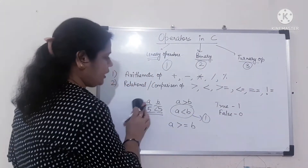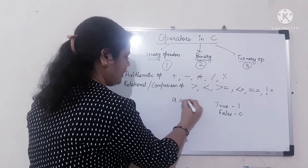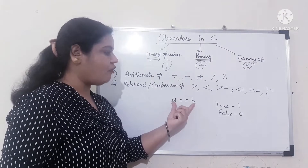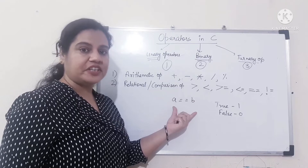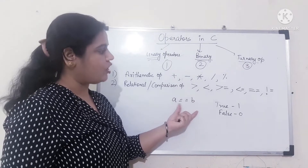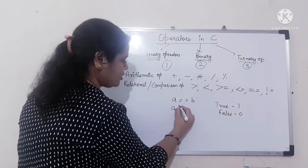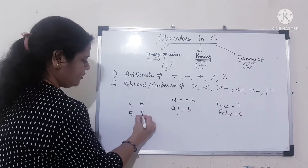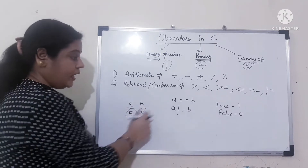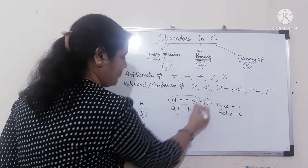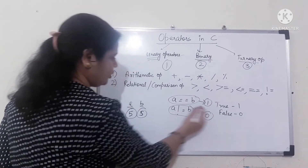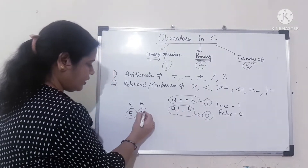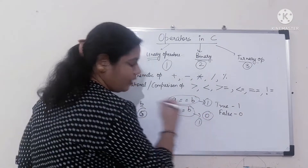Next is equal to. If I say A equal equal to B, it will compare the values of A and B. If both variables are equal, it returns true; otherwise false. And not equal to: if A is not equal to B, but they are both 5, they are equal, so it returns 0. If I say 5 and 6, they are not equal, so it returns 1.